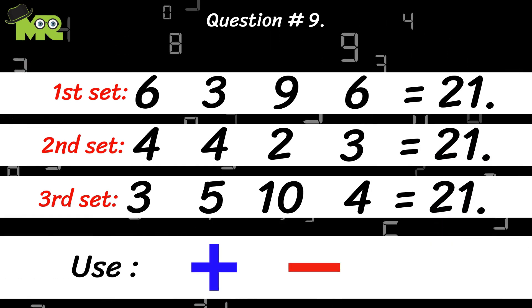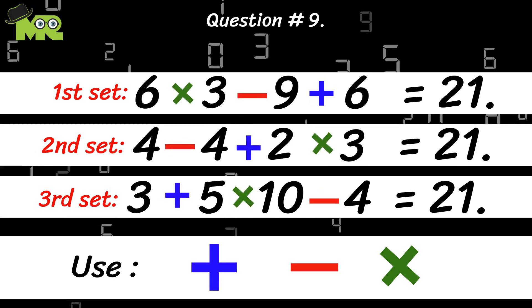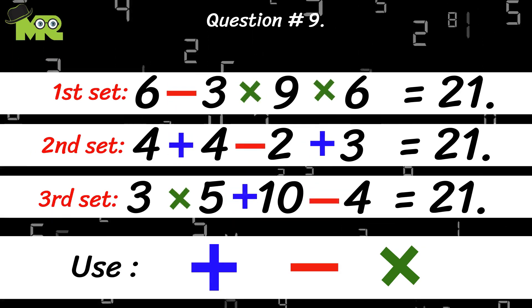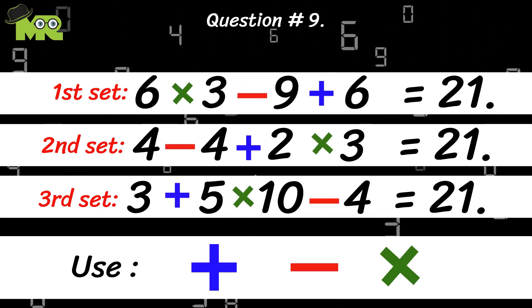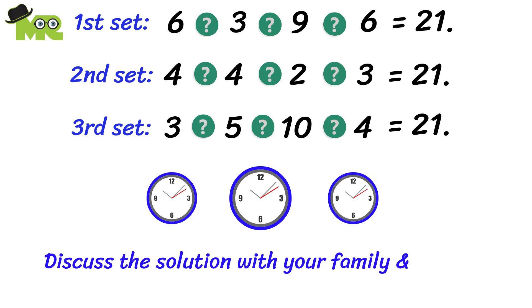You need to use the addition, subtraction, or multiplication signs and place them in between the following numbers in a way that each set of numbers can equal to 21. Take your time and work out your brain. We encourage you to discuss the solution with your family and friends.